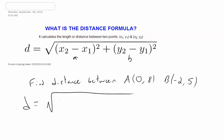You're going to get that D equals, let's see here, negative 2 minus 0. And that's because I'm calling this x2 and this x1. I'm going to square that, then add that to 5 minus 8, and I'm going to square that.